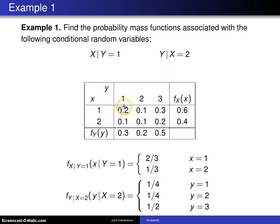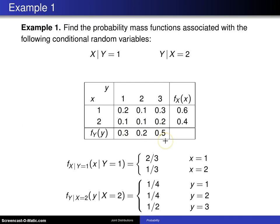In the table below, the six values on the inside are the joint probability mass function values for various values of X and Y. X can take on the values 1 and 2; Y can take on the values 1, 2, and 3. These six values all add to 1. The row sums are the marginal distribution of X, and the column sums are the marginal distribution of Y.